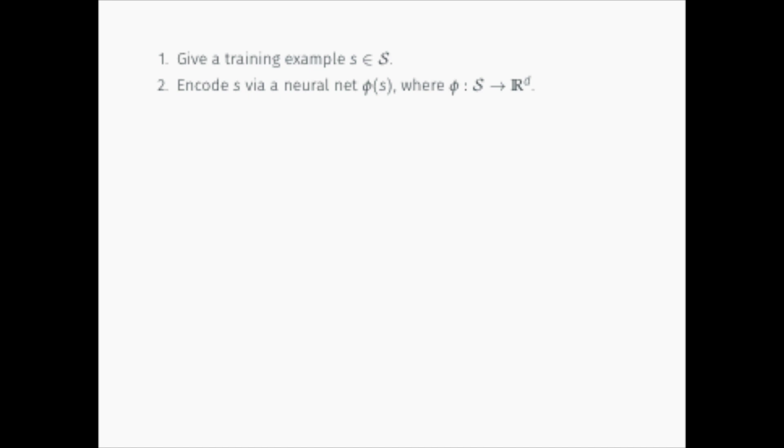Encode it through a neural network phi, leading to a latent embedding space of dimension d. Uniformly draw n tiles from the unit interval.